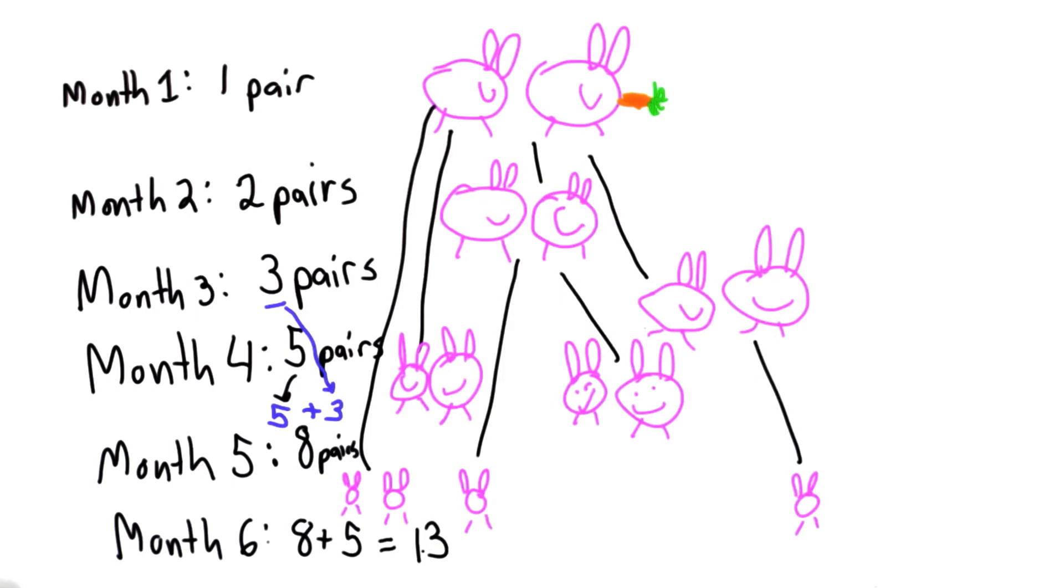This was the model Fibonacci developed. The question is, can you figure out at the end of month n, given any number n, how many rabbits there will be?